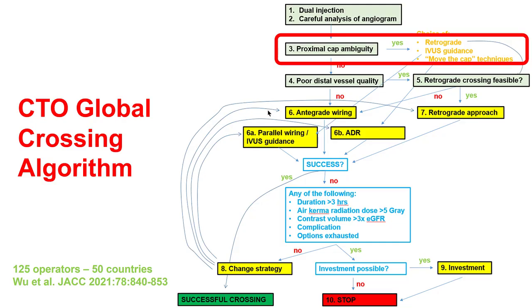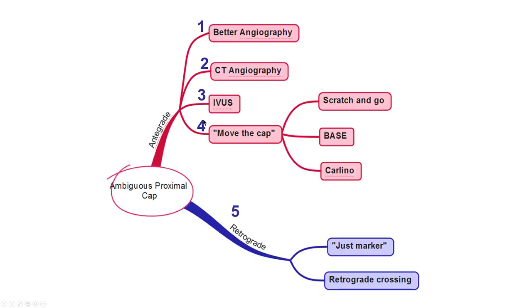Step three of the global CTO crossing algorithm concerns proximal cap ambiguity, which remains one of the most important anatomic characteristics of the CTO. If there is proximal cap ambiguity, different techniques can be used to resolve it, including the retrograde approach, use of intravascular ultrasound, and the move-the-cap techniques. The global algorithm does not favor one approach over another, but suggests using the most appropriate technique for the situation. Whether retrograde, moving the cap, or IVUS depends on the presence of collaterals, the operator's experience with these techniques, and experience using intravascular ultrasound.